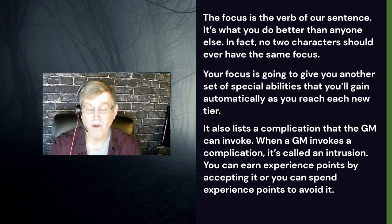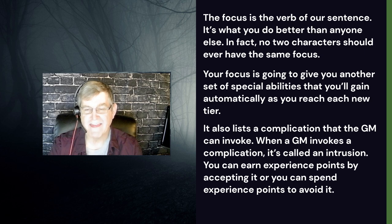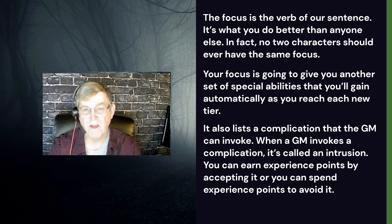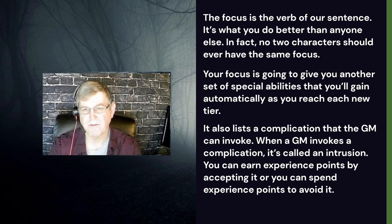You earn experience points by accepting an intrusion, or you can expend experience points to avoid it. For example, you're chasing someone down a dark alley and the GM makes an intrusion — you come around the corner and two gang members you had an altercation with earlier are there. The GM tells you that's an intrusion: you get two experience points, one for yourself and one to give to another party member. Or you can spend experience points to avoid it — the GM says the corner is clear and you can still see the person you're chasing.